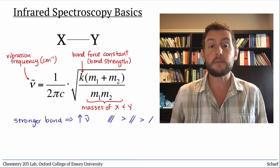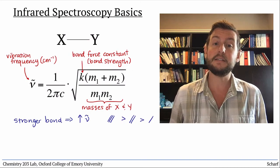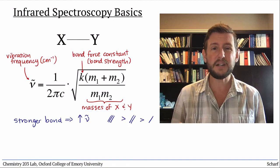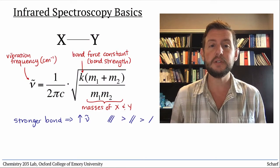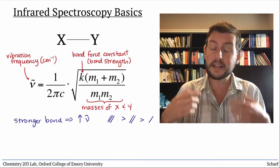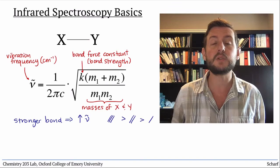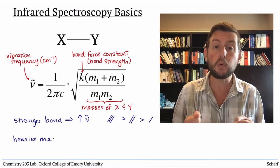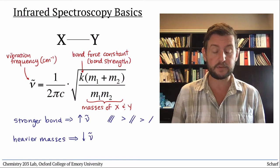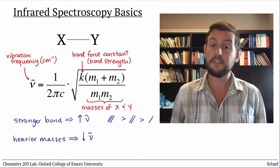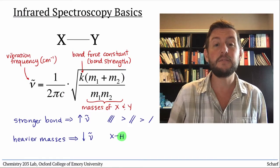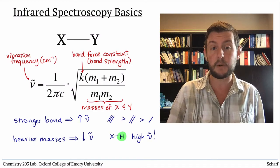We can also see from this equation that the masses of the bonded atoms influence the frequency. Since the product M1 times M2 is larger than the sum of M1 and M2, this is an inverse dependence. Heavier atoms will give rise to lower frequency vibrations, and lighter atoms will give rise to higher frequency vibrations. In fact, this means that bonds to hydrogen, the lightest element, give rise to the highest frequency vibrations found in any molecules.